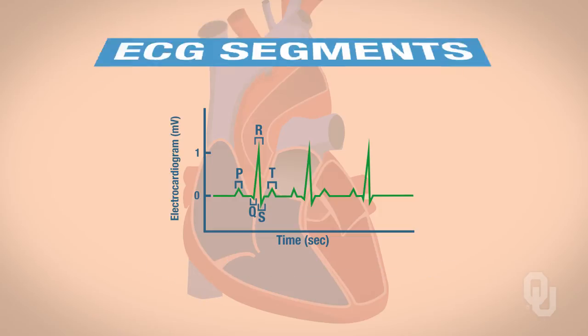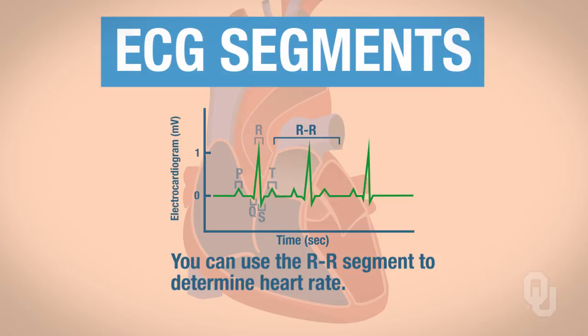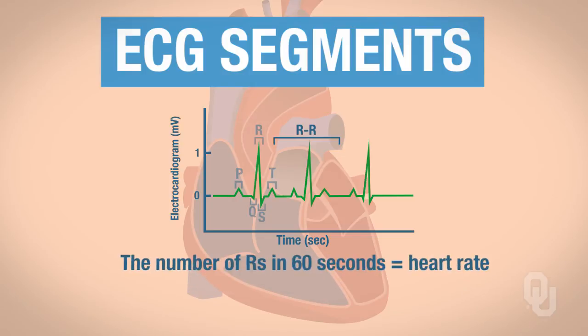Next are the ECG segments. In an ECG, you can use the R-to-R segment to determine heart rate. You just count the number of R's in 60 seconds, and that's your heart rate. Or you can count the number of R's in 15 seconds and multiply by 4.